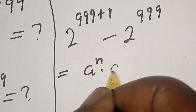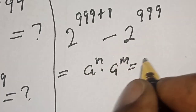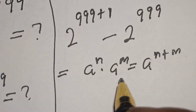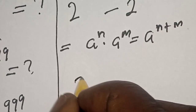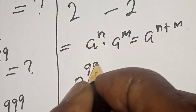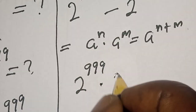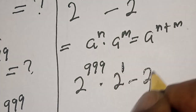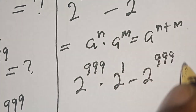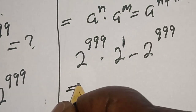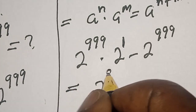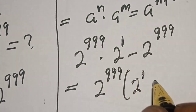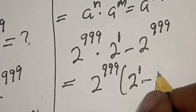Then using the rule that a raised to power n multiplied by a raised to power m equals a raised to power n plus m, this becomes 2 raised to power 999 multiplied by 2 raised to power 1, minus 2 raised to power 999, which equals 2 raised to power 999 into 2 raised to power 1 minus 1.